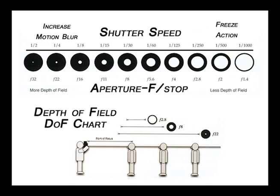On the depth of field chart, the photographer is on the left showing examples of subjects being shot. Above the subjects you'll see a narrow range — a shallow depth of field — at f2.8, meaning the aperture is wide open. This is called shallow depth of field or selective focus.